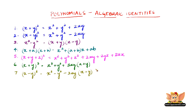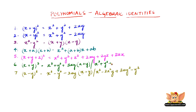We can also expand Identity 7 by multiplying 3xy with x and with y, giving x cube minus 3x squared y plus 3xy squared minus y cube. Similarly, Identity 6 expands to x cube plus 3x squared y plus 3xy squared plus y cube.